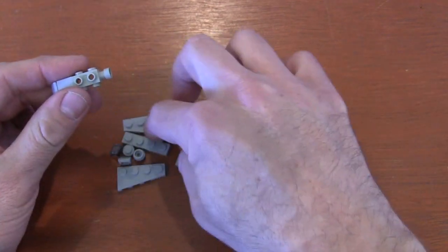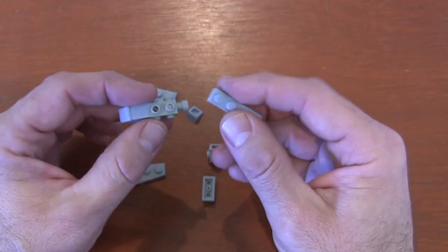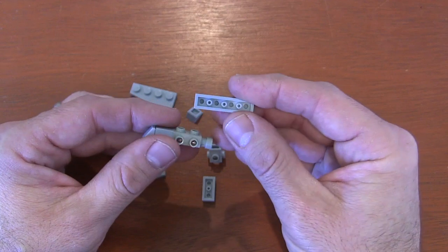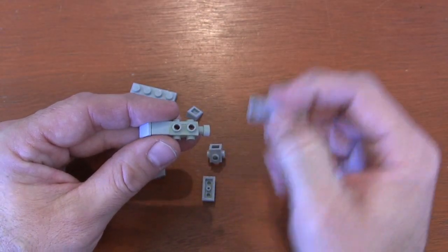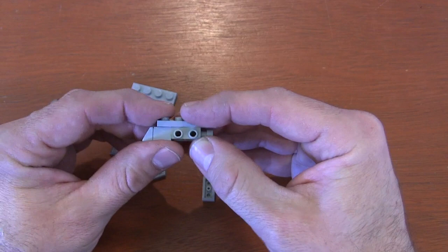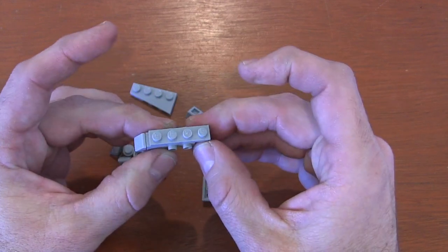On top here, get a 1x4 plate and position it so the two center holes are on those two studs. You can see how it lines up on top.